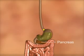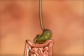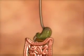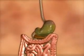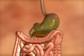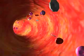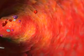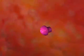Glucose is the main source of energy for body cells. When blood sugar levels rise, as is normal after a meal, the pancreas gland located behind the stomach secretes the hormone insulin. Insulin enters and circulates in the blood and acts